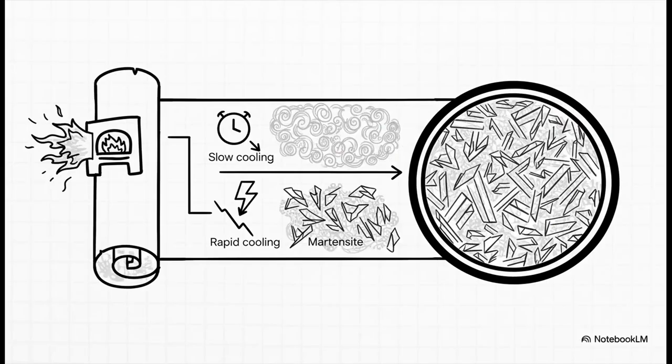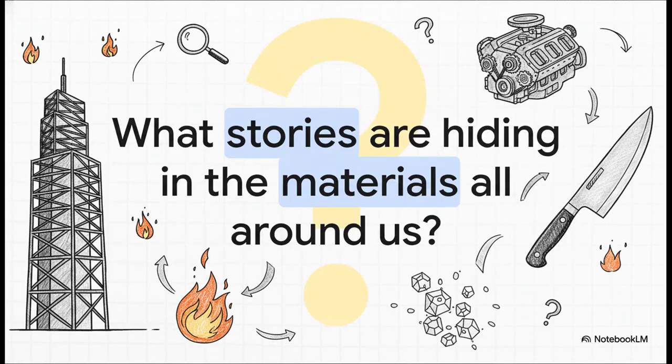In the end, what you're looking at is a permanent record. The final microstructure is a map that tells the complete story of the steel's thermal journey — every time it was heated, every time it was cooled, whether it was fast or slow. The secrets are all right there, frozen in these beautiful, intricate patterns. Every steel beam in a skyscraper, every component in your car's engine, even a simple kitchen knife has this hidden story locked inside its microstructure — a story of its own unique journey from fire to form. What other stories are hiding in plain sight in all the materials around us?